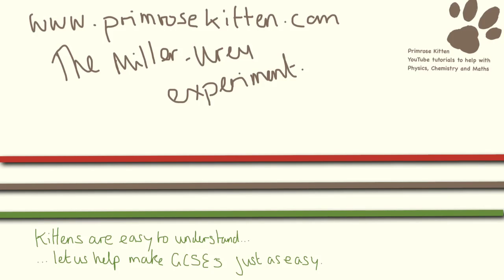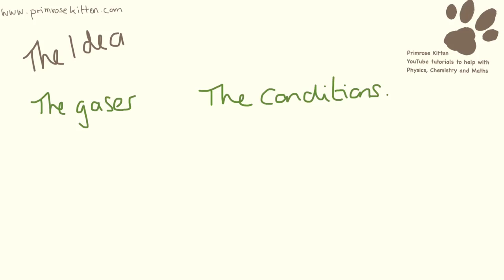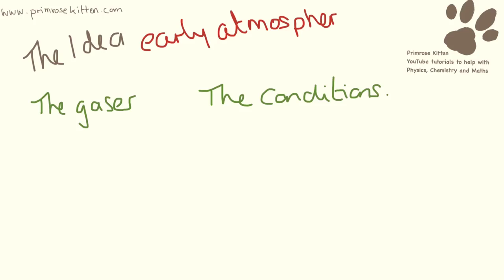The Millet Array experiment is really interesting for a couple of reasons. Firstly, it's the only named experiment they ask you to learn about in your C1 GCSE, and it's actually a really, really interesting set of results. The idea behind this was to prove how life originated on Earth. What they did is they took the conditions of the early atmosphere and tried to work out if those conditions could have led to the building blocks of life — things called amino acids. And that's what they were trying to make, taking all the stuff that was around at the beginning to produce amino acids.